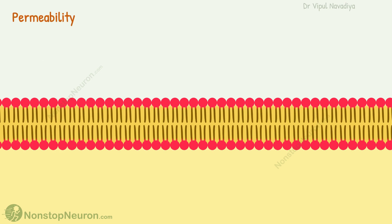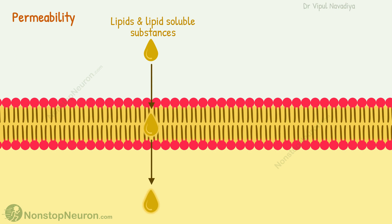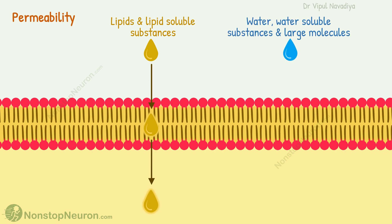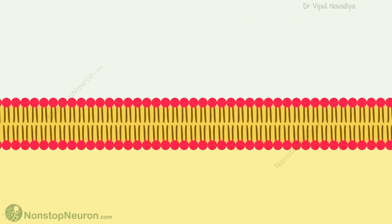Talking about the permeability of the lipid bilayer, it's semi-permeable. As it's made up of lipids, other lipids and lipid-soluble substances can dissolve in it and thus pass through it. Water and water-soluble substances, as well as large molecules, cannot pass through it. The lipid bilayer makes the backbone of the membrane, to which the proteins and carbohydrates are attached.